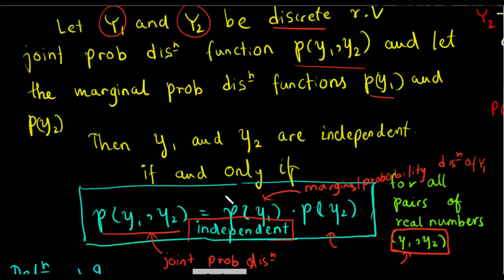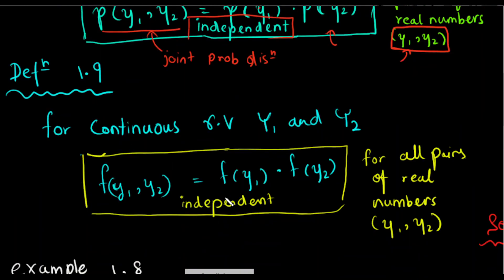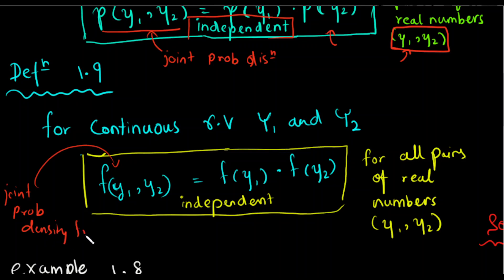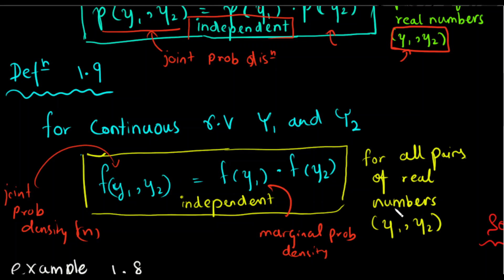We will talk about discrete random variables and we will talk about continuous random variables. As we talk about continuous random variables, we will talk about the joint probability density function. The joint probability density function of y1 and y2 — if the continuous random variables are independent, then the function must be valid.